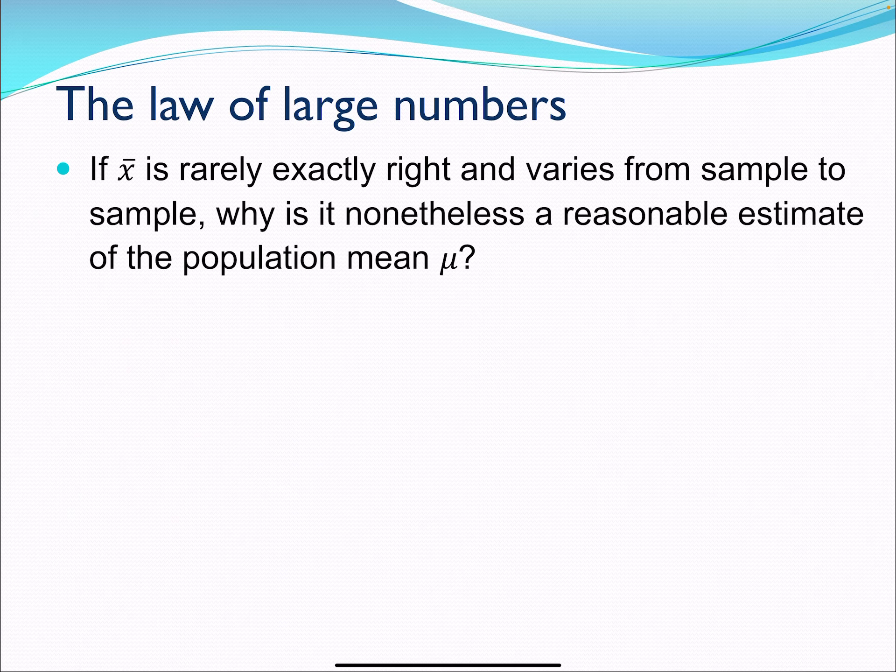The law of large numbers is this. So X bar, our sample mean, is rarely exactly right, and it varies from sample to sample. But why is this a reasonable way to estimate our population mean, especially if it keeps changing?